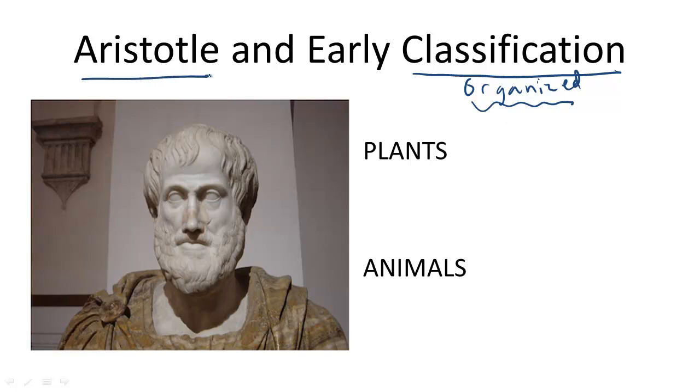Aristotle, for example, thought about classification of organisms, but he did so in a very different way than we currently do in modern biology. He was astute enough to recognize that there were distinct differences between plants and animals.